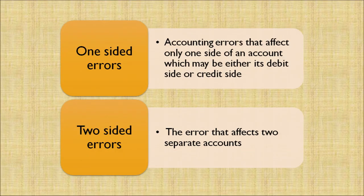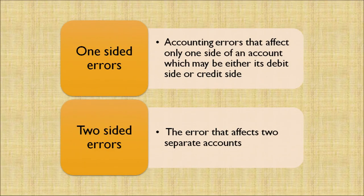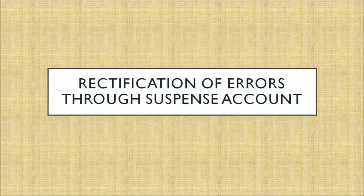One-sided errors mean the debit balance does not agree with the credit balance. Two-sided errors affect two separate accounts. There are two methods of rectification: one is before preparing a trial balance, which involves instant corrections or correction in the affected accounts; the second is after preparing a trial balance.